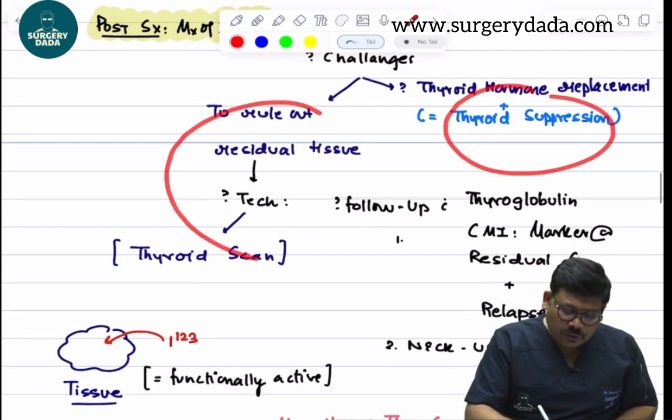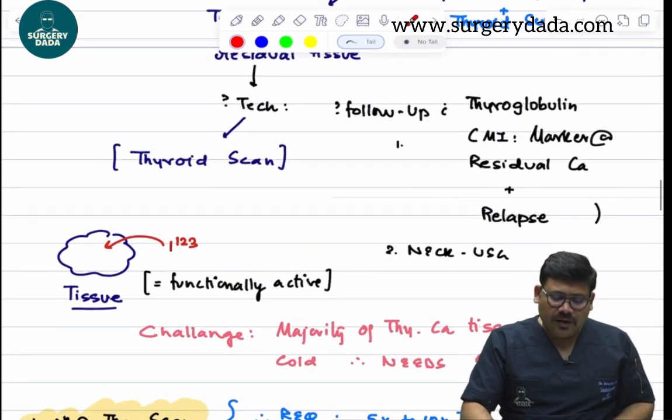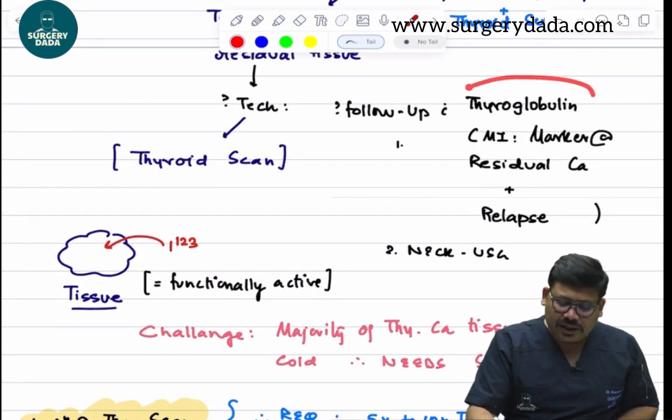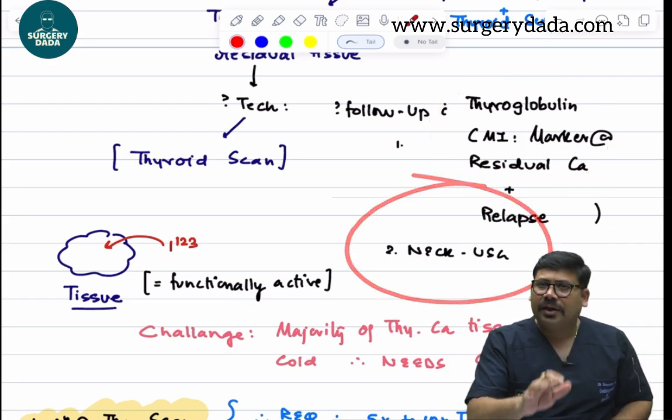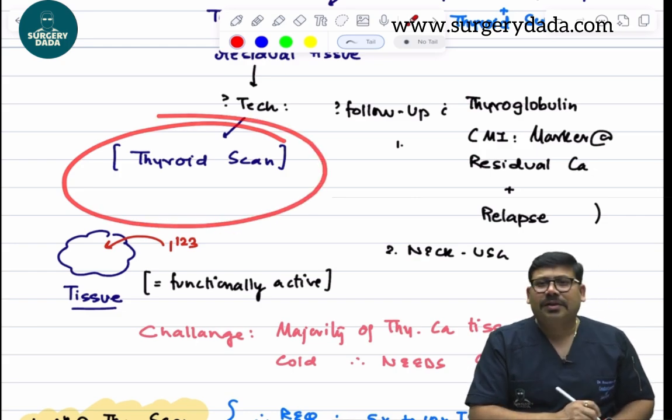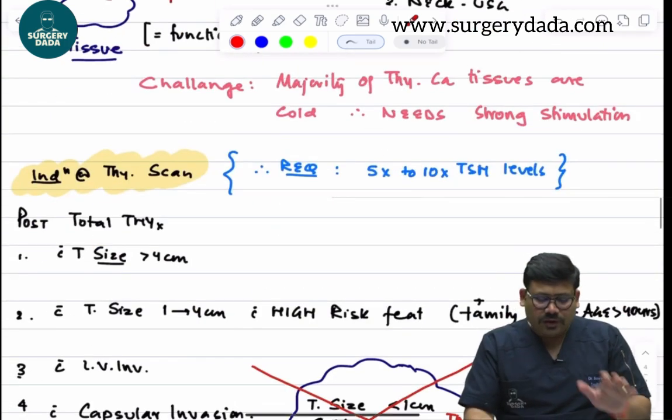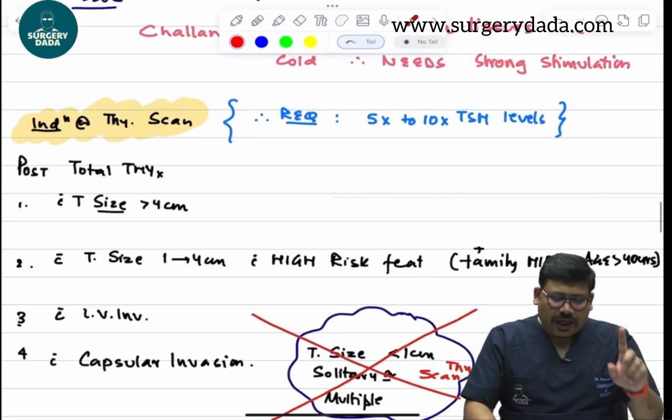Second, I need to rule out residual disease. To rule out residual disease, we'll keep a follow-up with thyroglobulin, which is the most sensitive, along with neck ultrasound 6 to 12 monthly. But the thyroid scan is the crux.